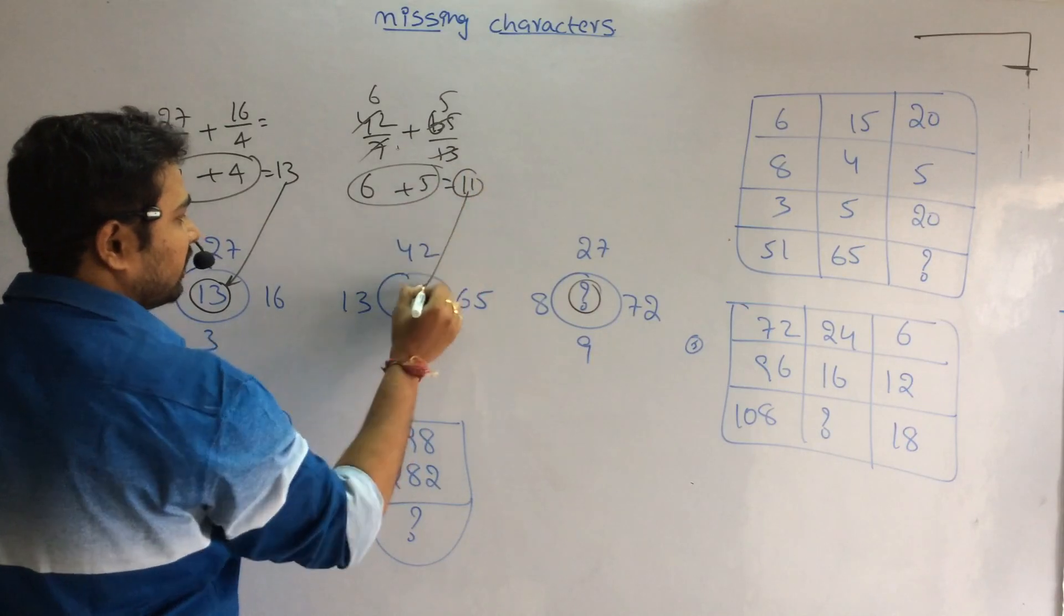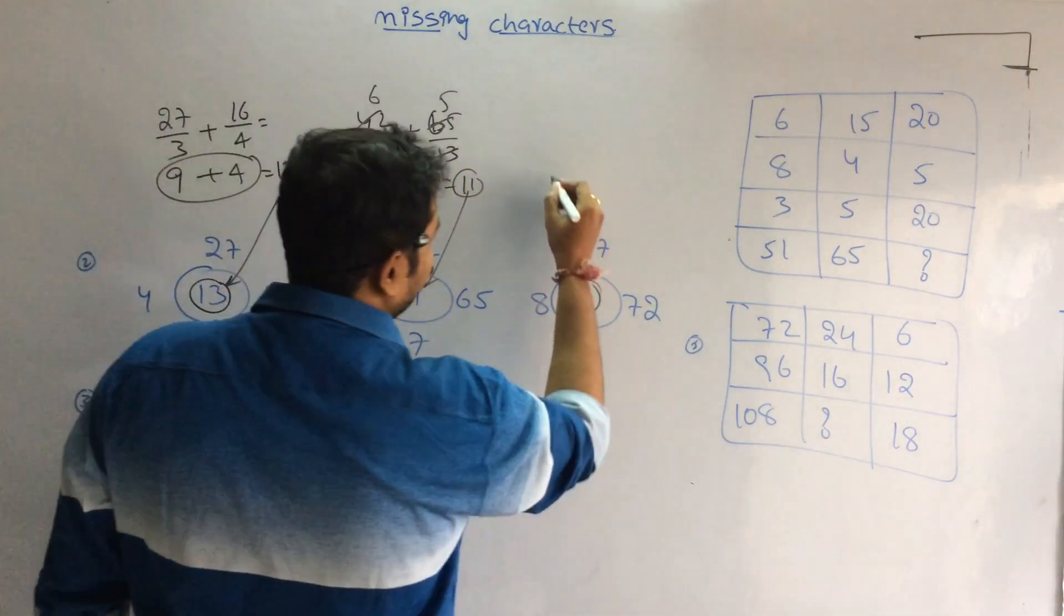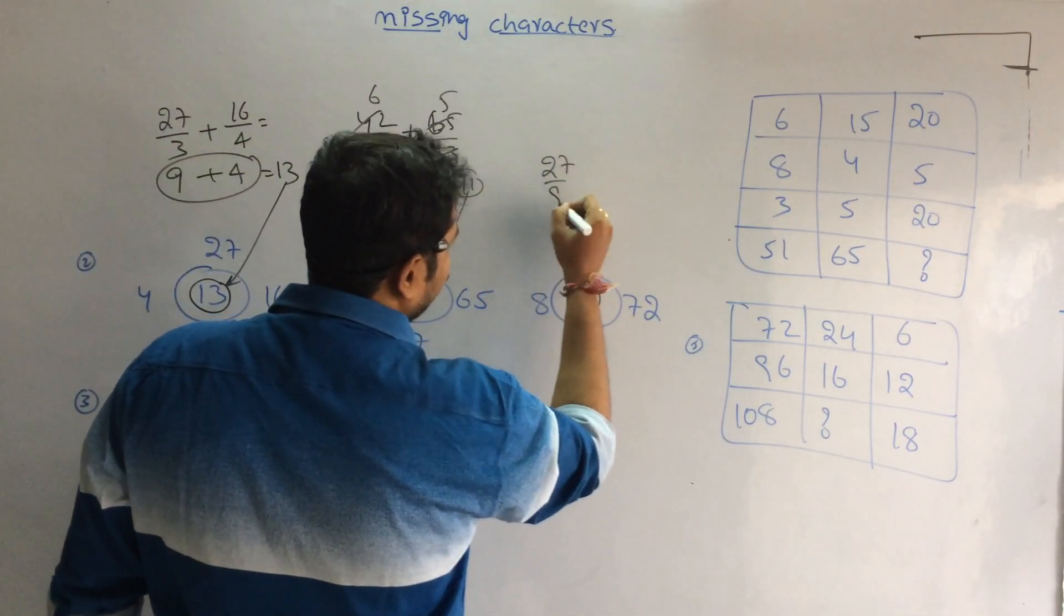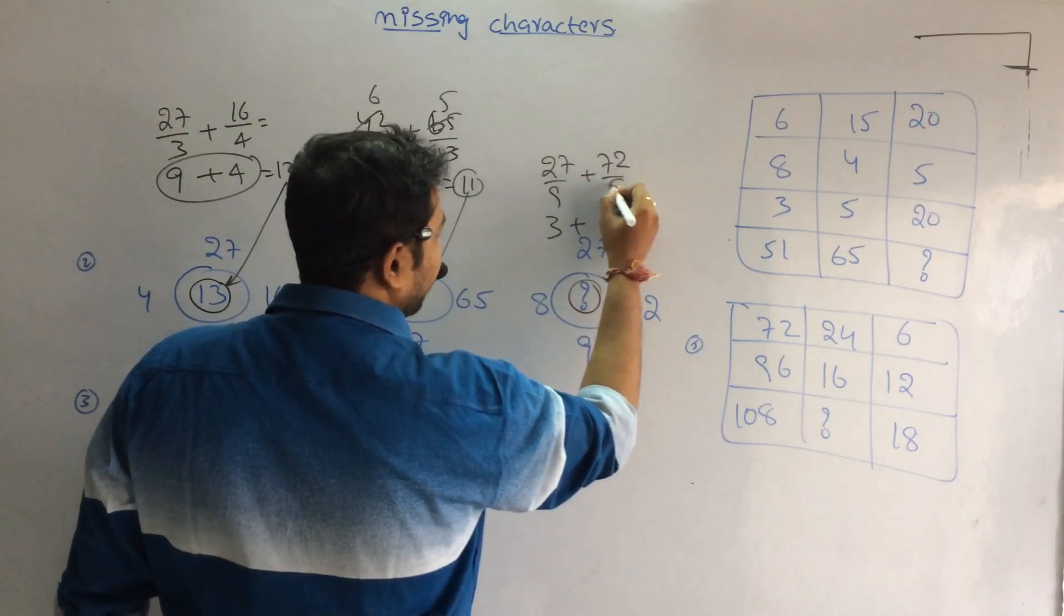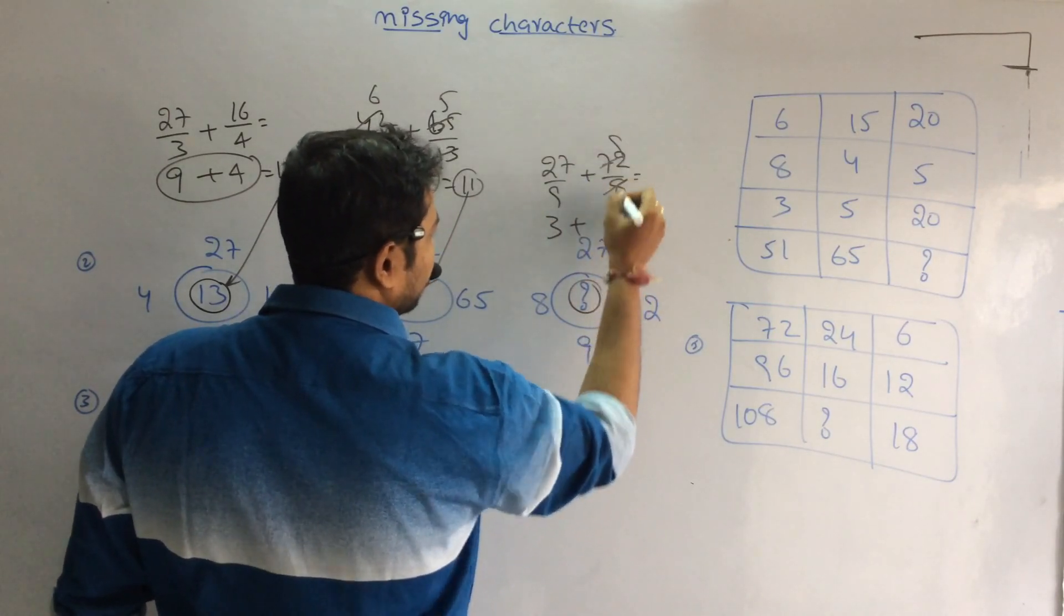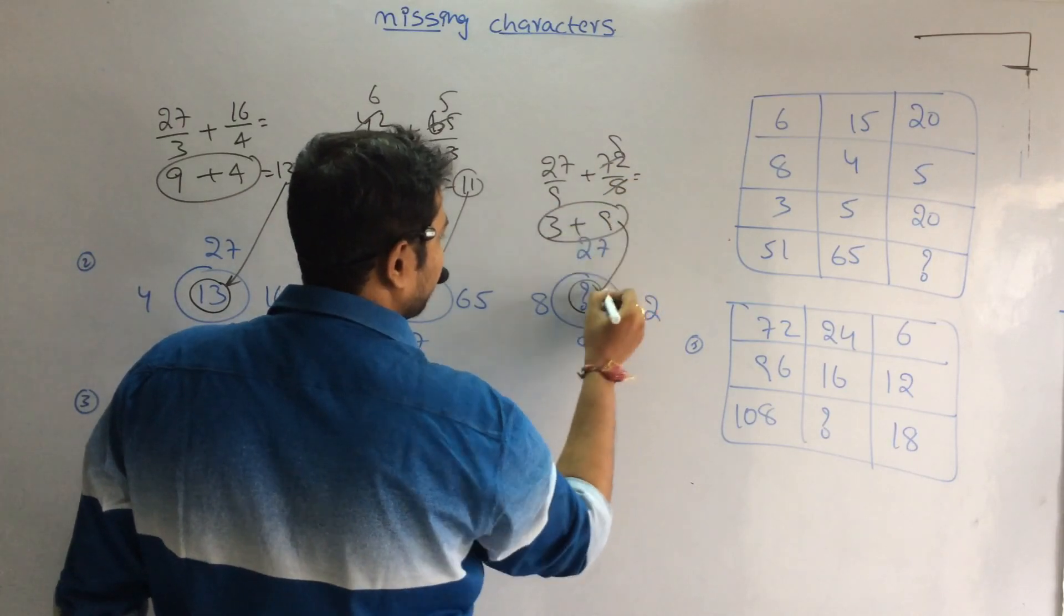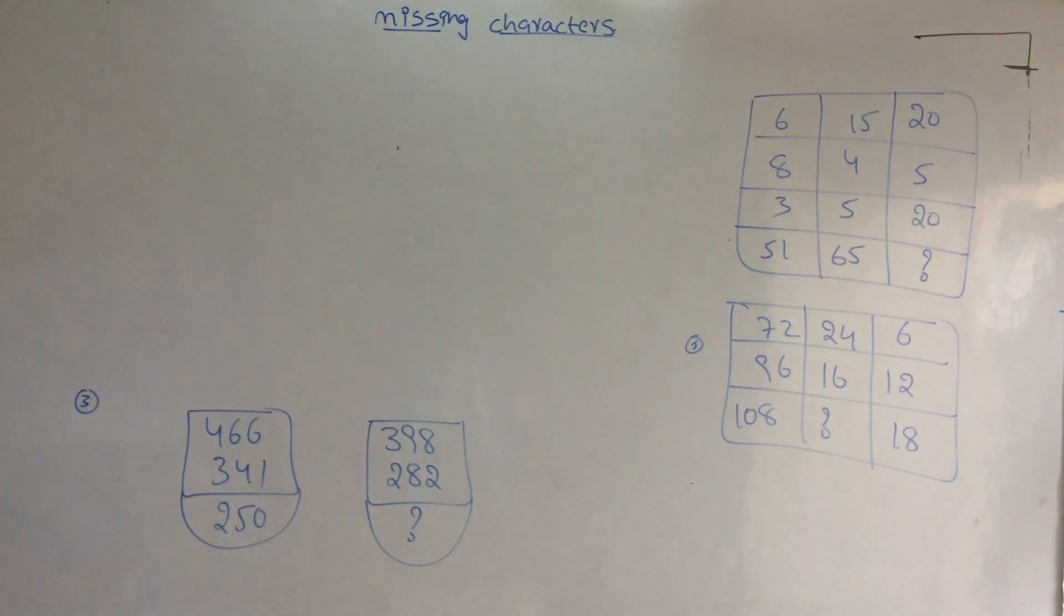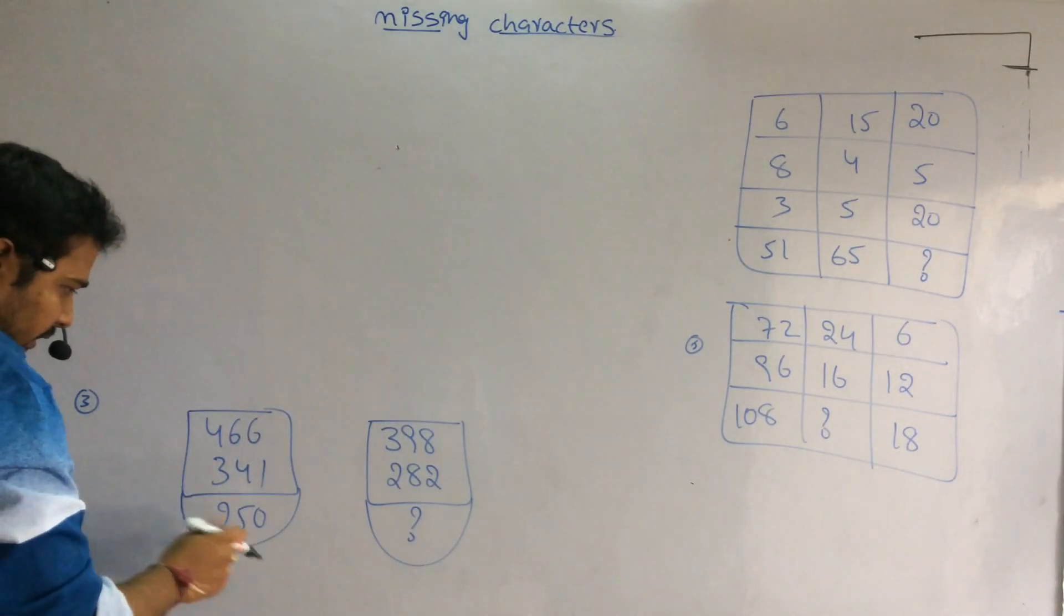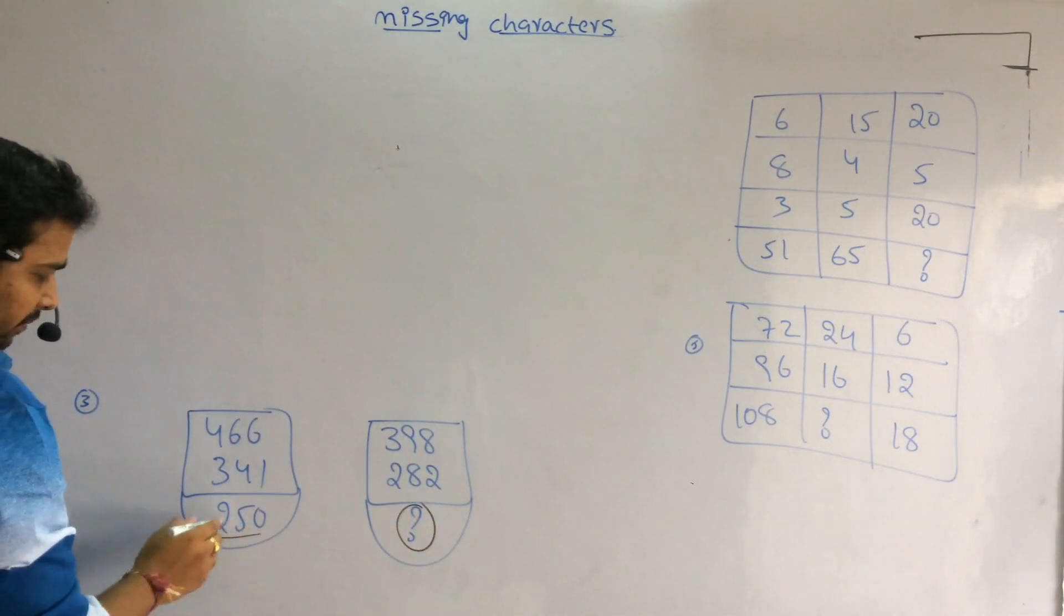Which is 11. The same way, 27 divided by 9 is 3, plus 72 divided by 8 is 9. That is equal to 9 plus 3. 12 is my answer.